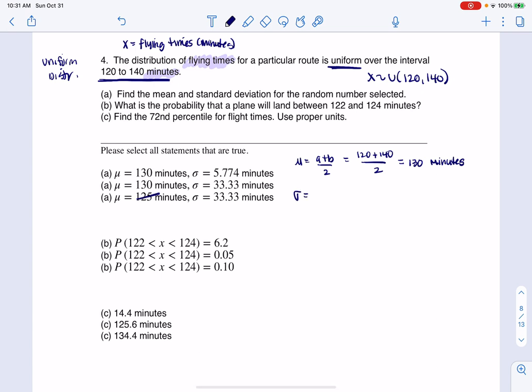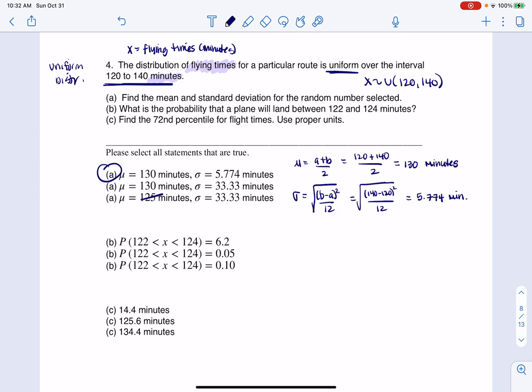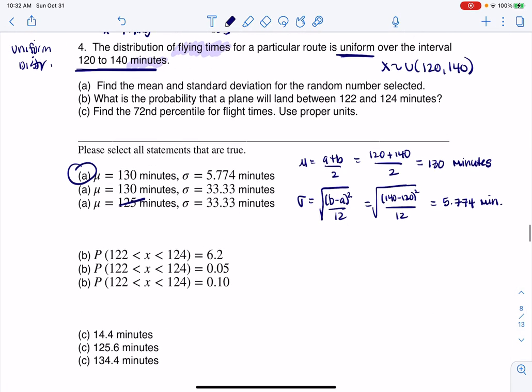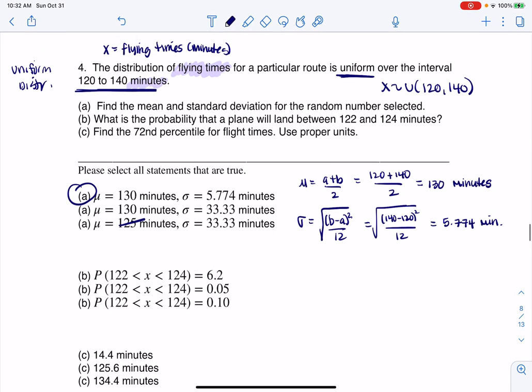Now the standard deviation is the square root of B minus A squared over 12. So if I want the standard deviation, we're going to go 140 minus 120. I'm going to square that number, divide it by 12. And let's get the standard deviation. When I crunch that, I'm going to get 5.774. And again, the units are minutes. So that takes us to that answer.